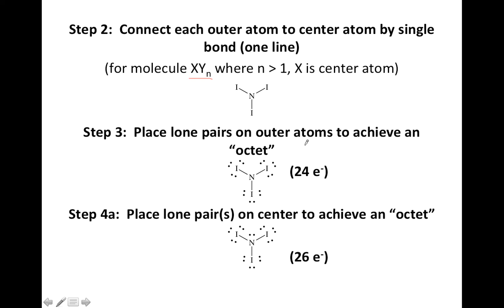Step three says place lone pairs on the outer atoms to achieve an octet. Let's just look at this iodine over here. You'll see that there's a line coming off of it, so that represents two electrons, and then there's three of these lone pairs.